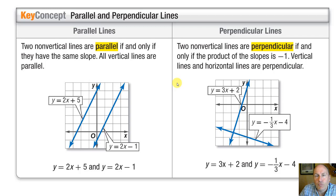So let's look at the properties of parallel lines. Two lines are parallel if they have the same slope or rate of change. So you can see here, as an example, we have two lines both in slope-intercept form: y equals 2x plus 5 and y equals 2x minus 1.